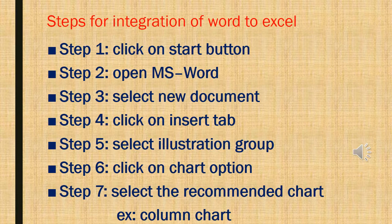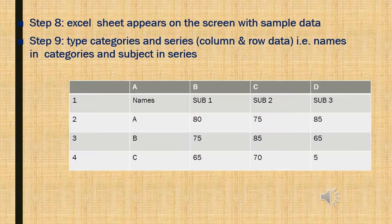Step 7: Select the Recommended Chart — for example, Column Chart. Step 8: Excel Sheet appears on the screen with the sample data. Step 9: Type the Categories and Series column and row data, i.e., Names in Categories and Subject Series.